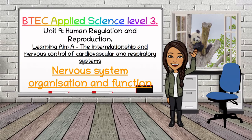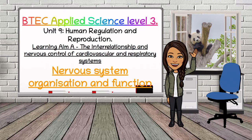Hi everyone and welcome to another video by BioTeach. This time I want to focus on the BTEC assignment unit 9, which is called human regulation and reproduction. There are three learning aims to this unit, and learning aim A looks at the interrelationship and nervous system control of the cardiovascular and the respiratory system. This video focuses on nervous system organisation and functions, and there are a number of videos on the playlist on my channel that are relevant to this unit. Click the link that's just flashed up on your screen to access them all.